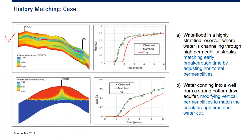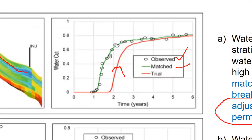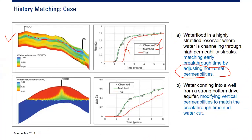In this case, we match the early breakthrough time by adjusting horizontal permeability. The white dots are the actual data. The red trial line doesn't match, but the green match condition line does match. The simulator adjusts the horizontal permeability to get the good matching green line. So that's the case of history matching — adjusting horizontal permeability to match breakthrough time.